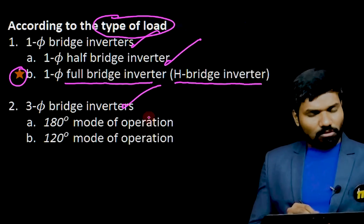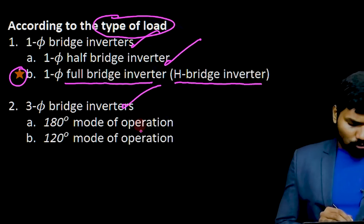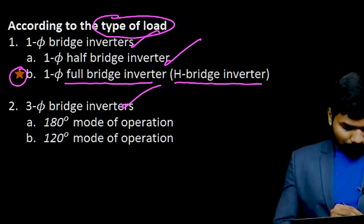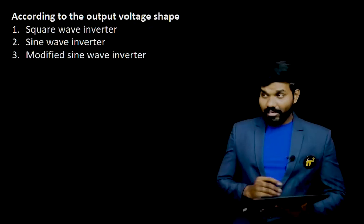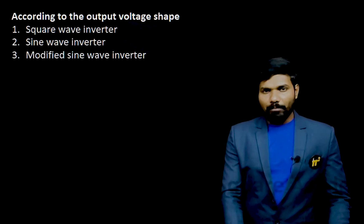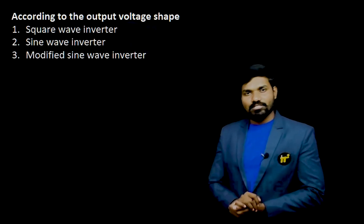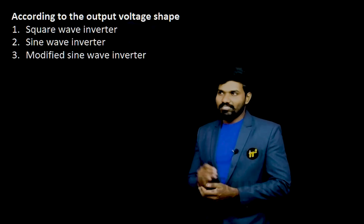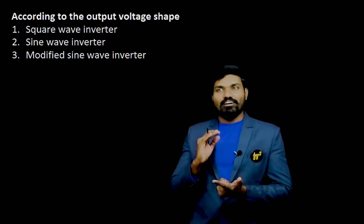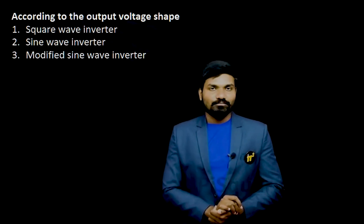The three phase inverter, based on mode of operations, can be categorized into two types. According to the output voltage shape, inverters are categorized into three types: square wave, sine wave, and modified sine wave inverter.